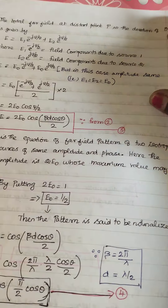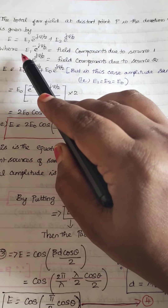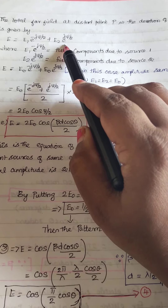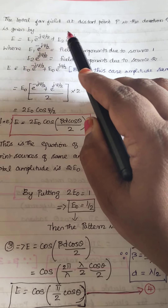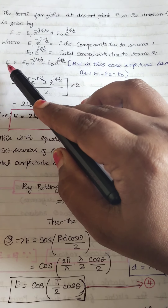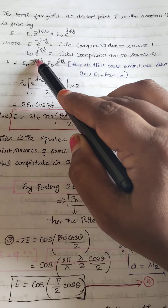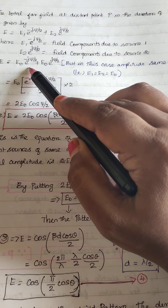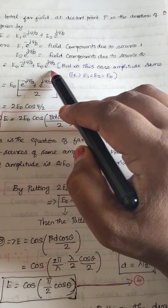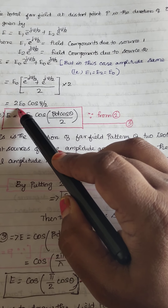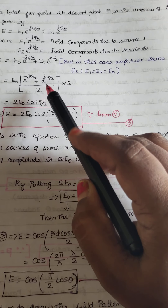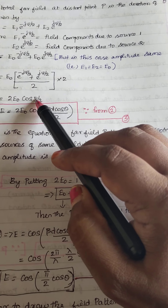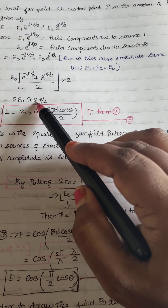Next, we find the total electric field. The first antenna contributes electric field E1 times e to the power minus j psi by 2, and the second antenna contributes E2 times e to the power plus j psi by 2. Adding the total electric field, where E1 equals E2 equals E0, we get E equals E0 times e to the minus j psi by 2 plus e to the plus j psi by 2. Applying the cosine identity, this simplifies to 2 E0 cos of psi by 2.